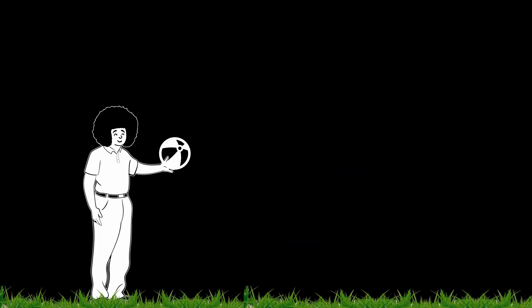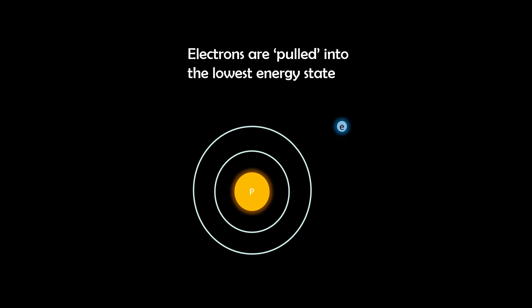So let's start by understanding what a ground state electron configuration actually is. Imagine tossing a ball into the air. It falls back to the ground due to gravity's pull towards a stable low energy state. Electrons behave similarly within atoms, being pulled into a low energy stable position.